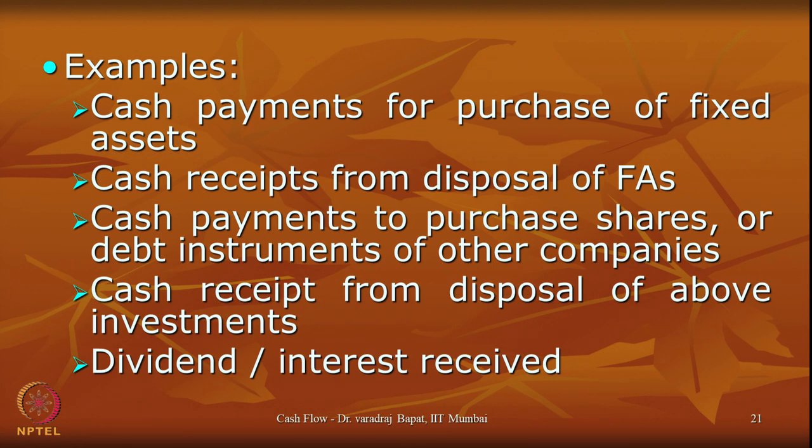For operating activities there were two methods — direct and indirect. Luckily, there are no two methods in investing activity. You directly show whatever you have received or paid. The calculation of investing activities is very simple — there is nothing to be afraid of. Whatever amount is paid or received for fixed assets or investments is directly shown. Keep in mind we are not talking about profit or loss on sale of machinery; that is for P&L. We are only concerned with the total amount received or paid for fixed assets.